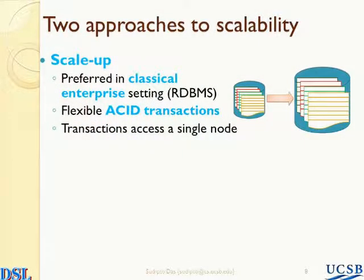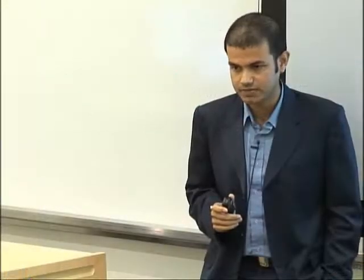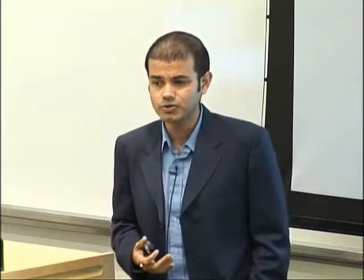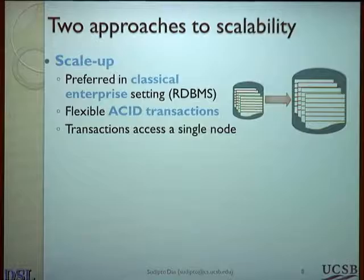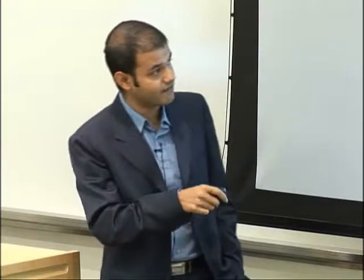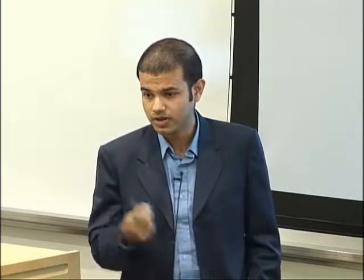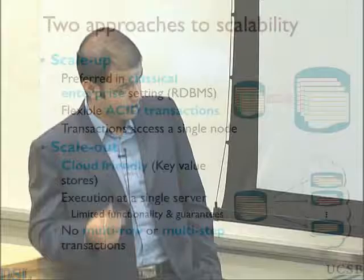If you consider the challenge of scalability, there are classically two different approaches. One approach is scale-up, where you throw more powerful or high-capacity hardware. This is typically used in the classical enterprise setting, where it was more convenient to scale up the databases. Relational databases are popular examples that like scale-up, because the rich functionality they support makes it easier to scale them up. The key idea is that you limit access to a single node, which is key for efficiency and good performance.